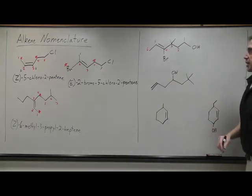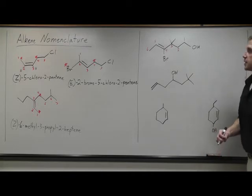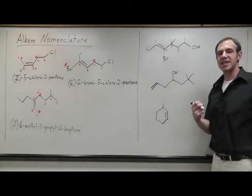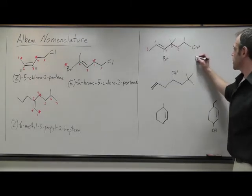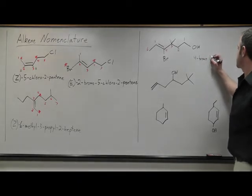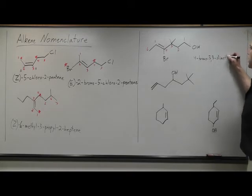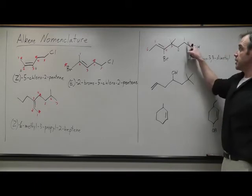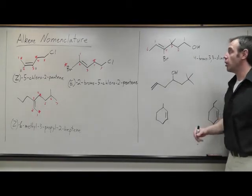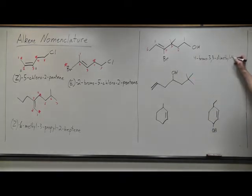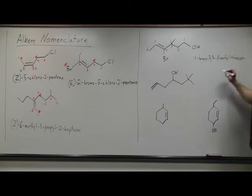In this specific example now, we're changing the parent name two ways. This is going to be not a hexane, it'll be a hexane-ol. We see we have two methyl groups and a bromo substituent. So this would be 4-bromo, 3,3-dimethyl. And now it gets tricky because we have to designate the position of the alcohol and the position of the alkene. In the name hexenol, ene comes before ol. So four will designate the position of the alkene.